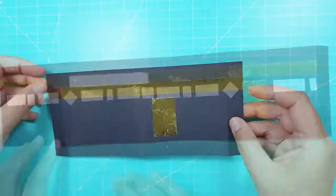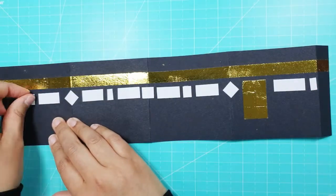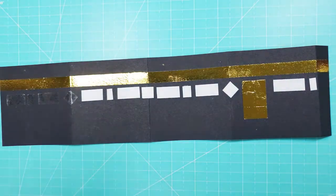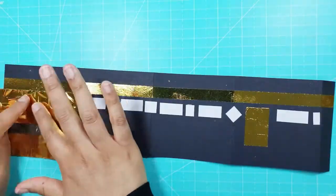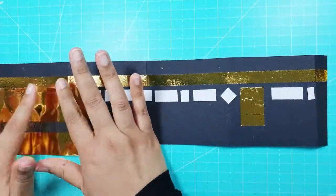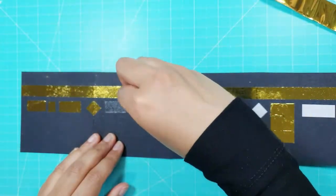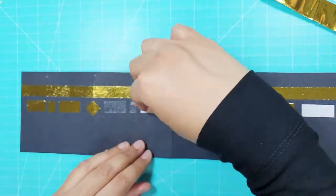I stuck both pieces of black card together using double-sided tape and stuck on different sized double-sided tape strips to represent the golden embroidery of Quranic verses on the Kiswah which is the black cloth that covers the Ka'bah. I added on the gold foil just like I did before.